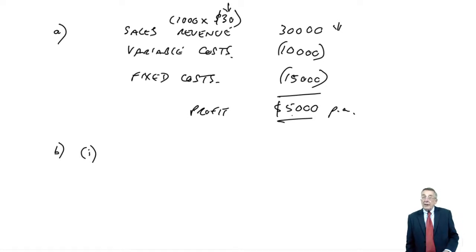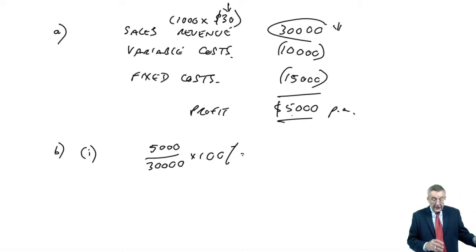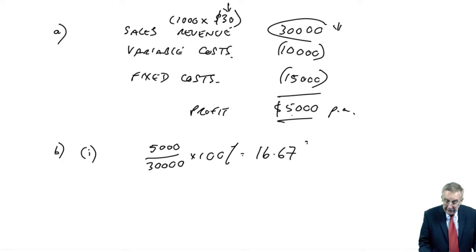Well, to get to a profit of zero, we can afford the profit to fall by £5,000. The only thing that's going to change is that £30. And so, the sensitivity will be 5,000 over 30,000 as a percent, which is 5 over 30, 16.67%.